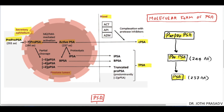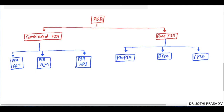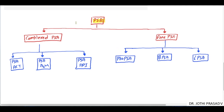Two forms are released into the blood: complex PSA and free PSA, with various other molecular subtypes. Complex PSA is approximately 60 to 95% of total PSA, while free PSA is only 5 to 40% of total PSA.